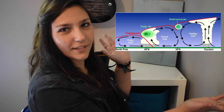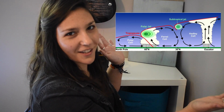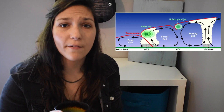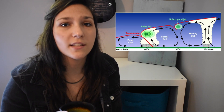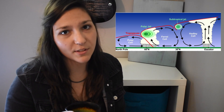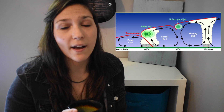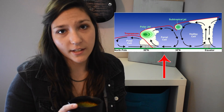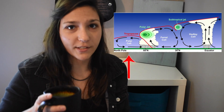You've probably seen in science class this three-cell system that the Earth's atmosphere has. Looking at this image, you can see three different cells of air rotation: the Hadley cell, the Ferrel cell, and the polar cell.